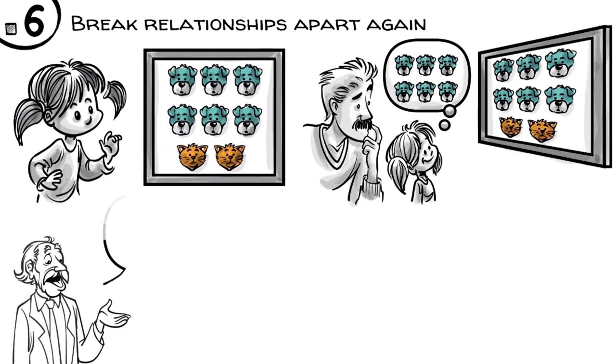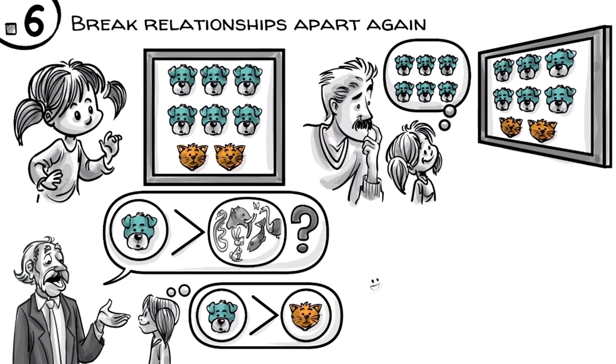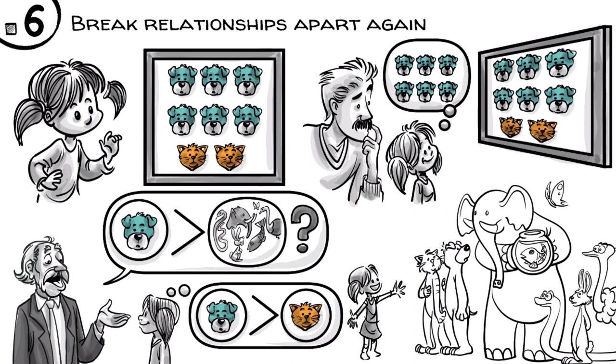In other words, if you ask, are there more dogs or more animals, the child hears, are there more dogs or more cats? At age five, most kids didn't practice enough math to break hierarchical relationships apart while still remembering the whole.